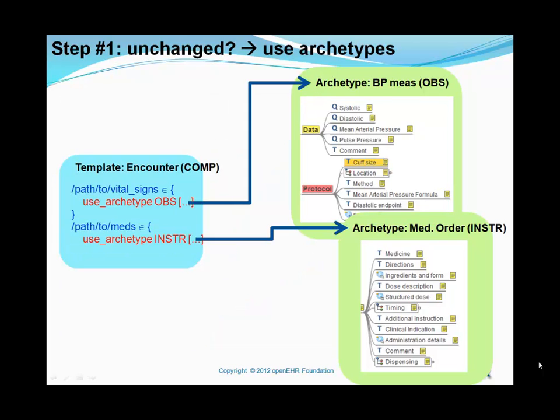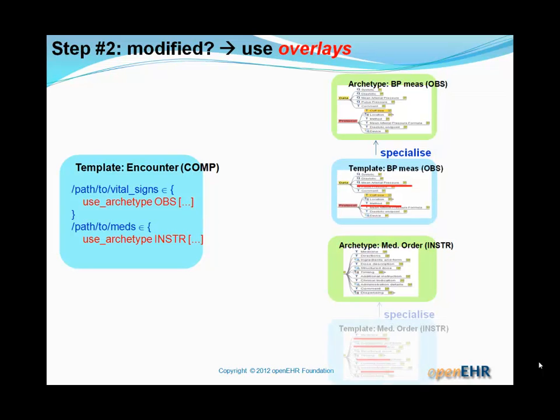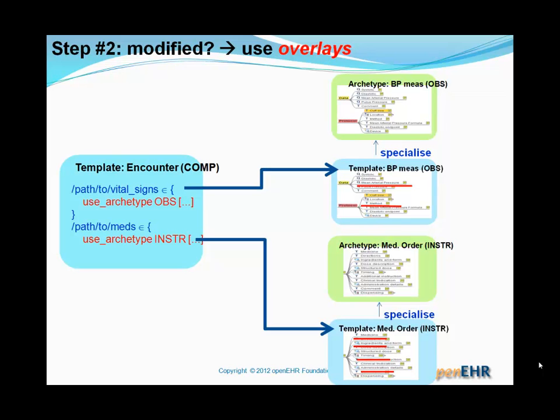Now, the way to do this: first, we specialize that archetype into a template — a template is a specialized archetype. The specialization operation enables you to create a new archetype based on an original, or a template based on an archetype, or indeed a template based on a template. So we have a template of this encounter, of the same reference model type composition, and we're going to fill those two slots with these particular archetypes. Do we want to put those two archetypes — blood pressure and medication order — in their entirety into those positions? It's extremely unlikely, because those archetypes are maximal datasets containing things you'll never need altogether.